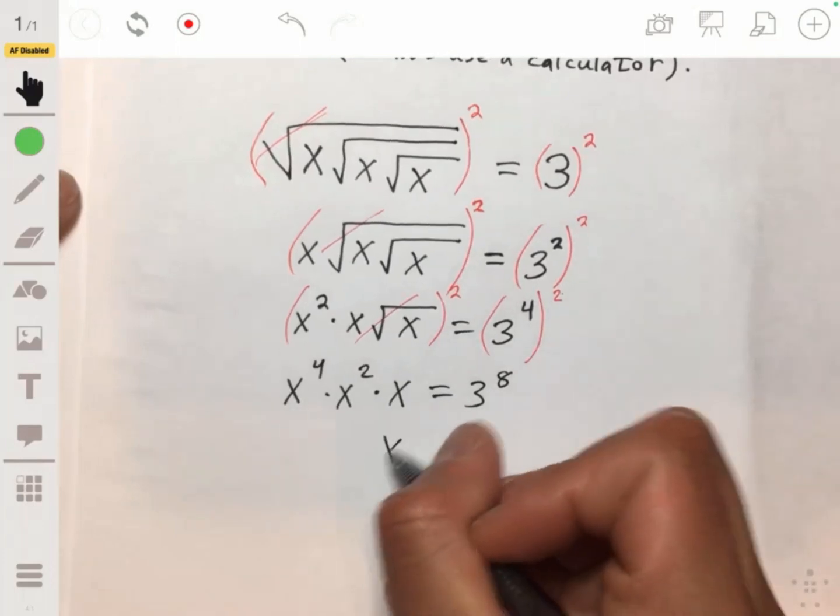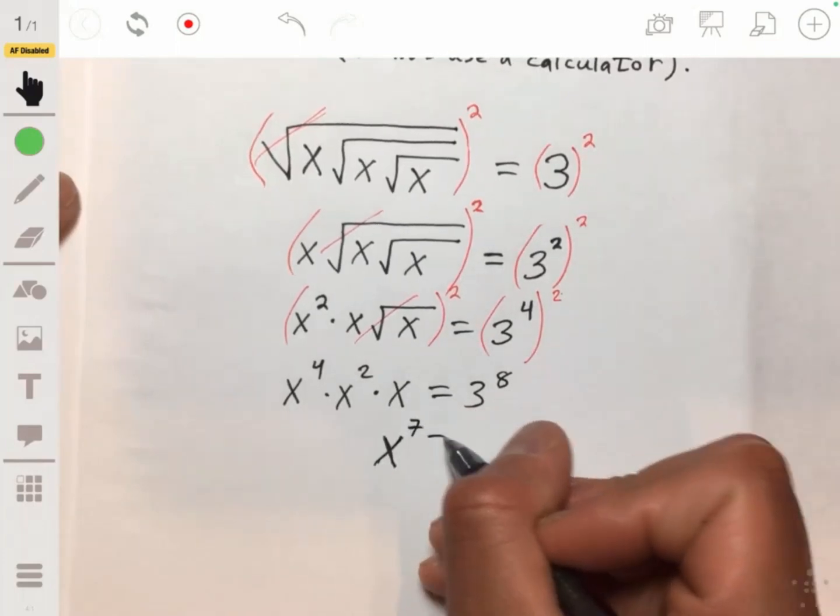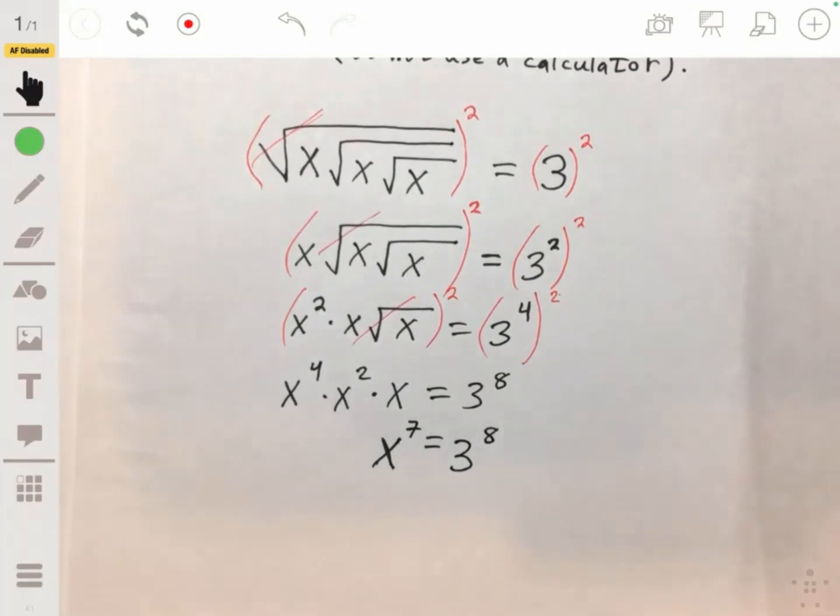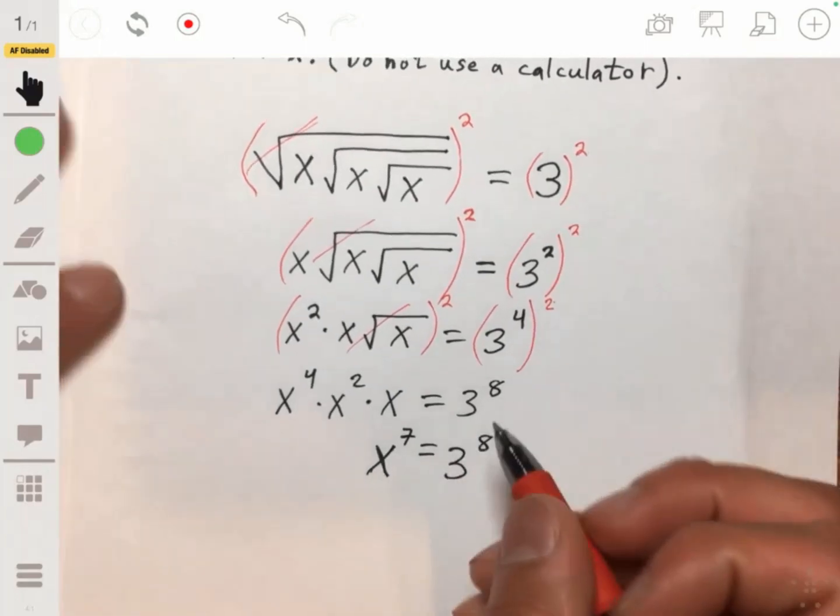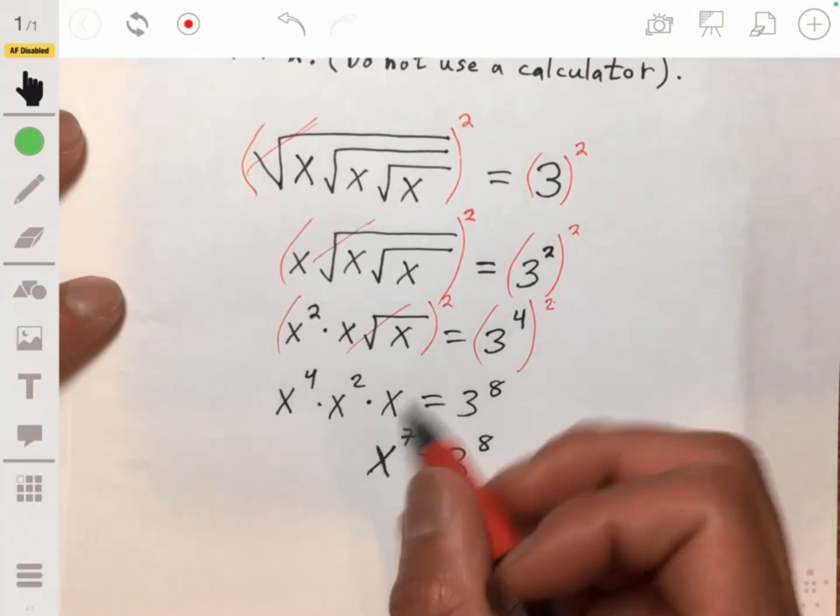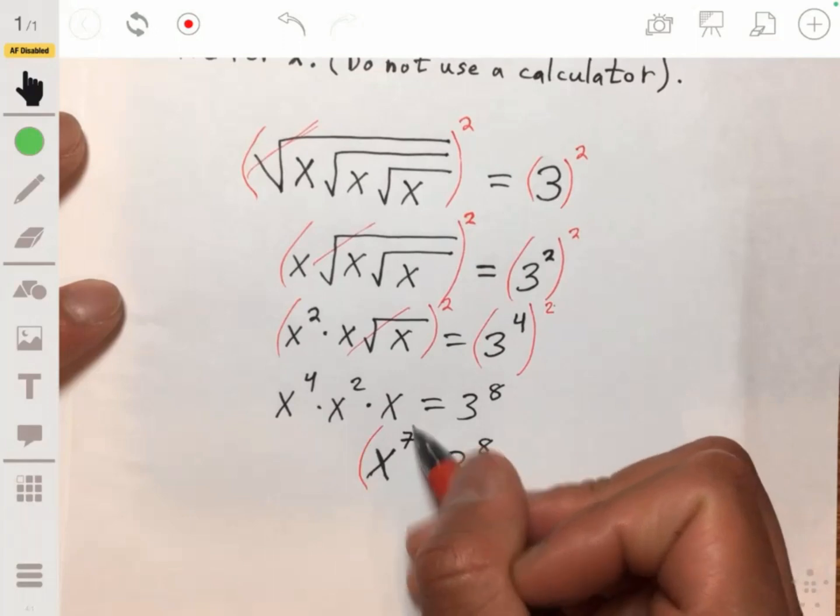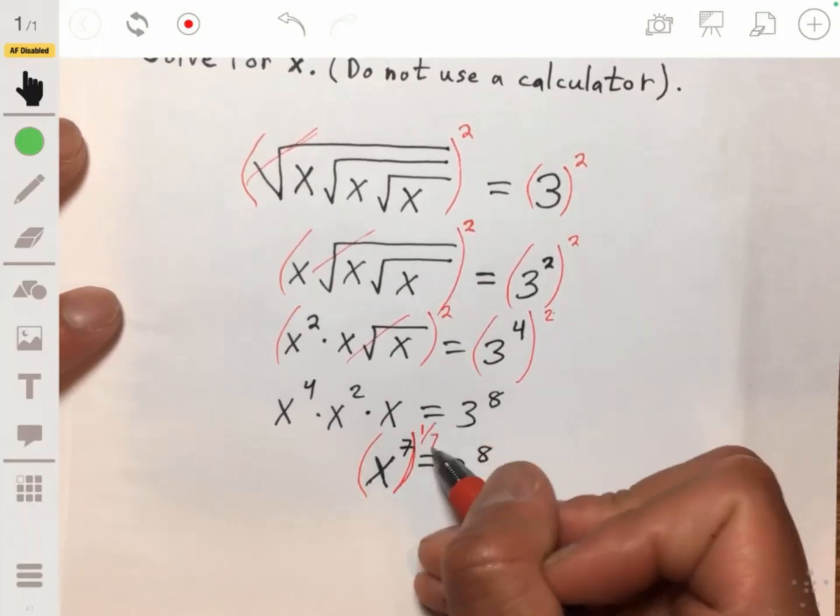And so we'll have x to the seventh being equal to 3 to the eighth. And then we just need to take the seventh root of both sides. Or raise each side to the one-seventh power, so to speak.